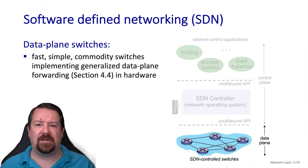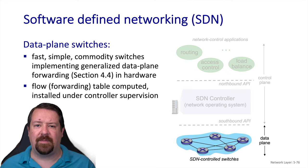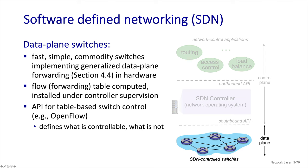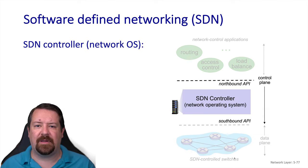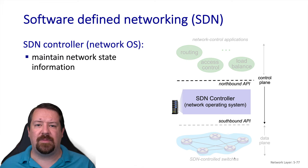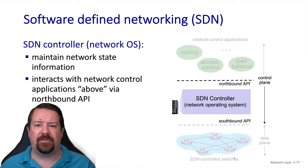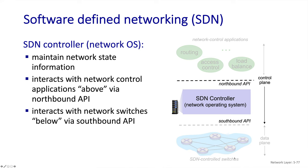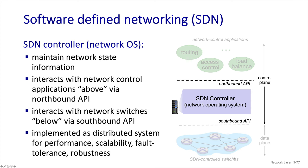To flesh out some details: we have fast, relatively simple commodity switches that run at the data plane. Because we have a standardized interface between the data plane and the control plane, we can mix and match vendors' devices and not be locked into one vendor. The control plane supervises computation of the forwarding table and its installation onto the switches using an API that defines which switch operations are controllable. The SDN controller is an application running on a server — essentially the operating system managing the whole network's resources — and must keep track of state across the network. Ideally, it is distributed across multiple servers for scalability and survivability.